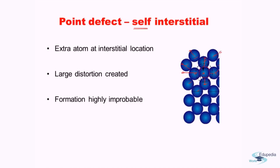Due to this large distortion, there is a large increase in energy — distortion results in energy enhancement. Therefore, it is quite an improbable scenario to form self-interstitials. Even if self-interstitial atoms are present, they will be very few in number — much less than vacancies.